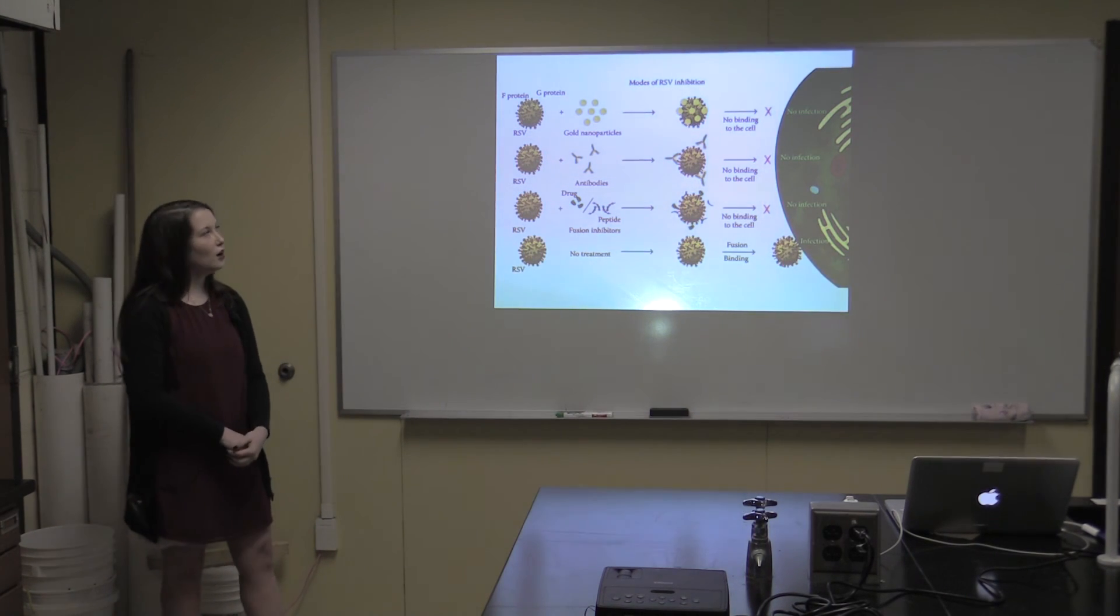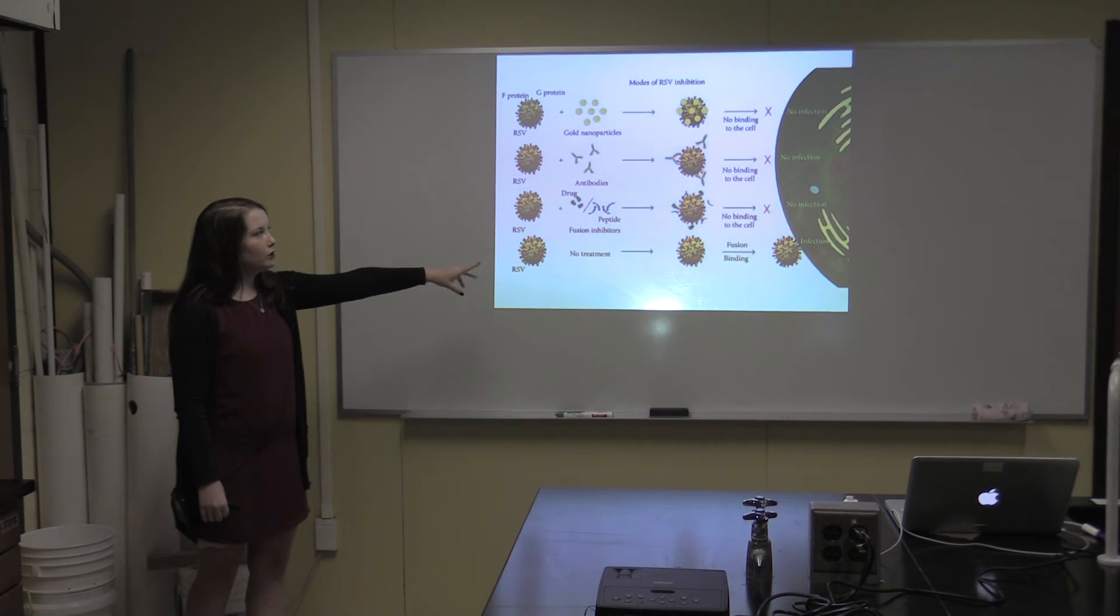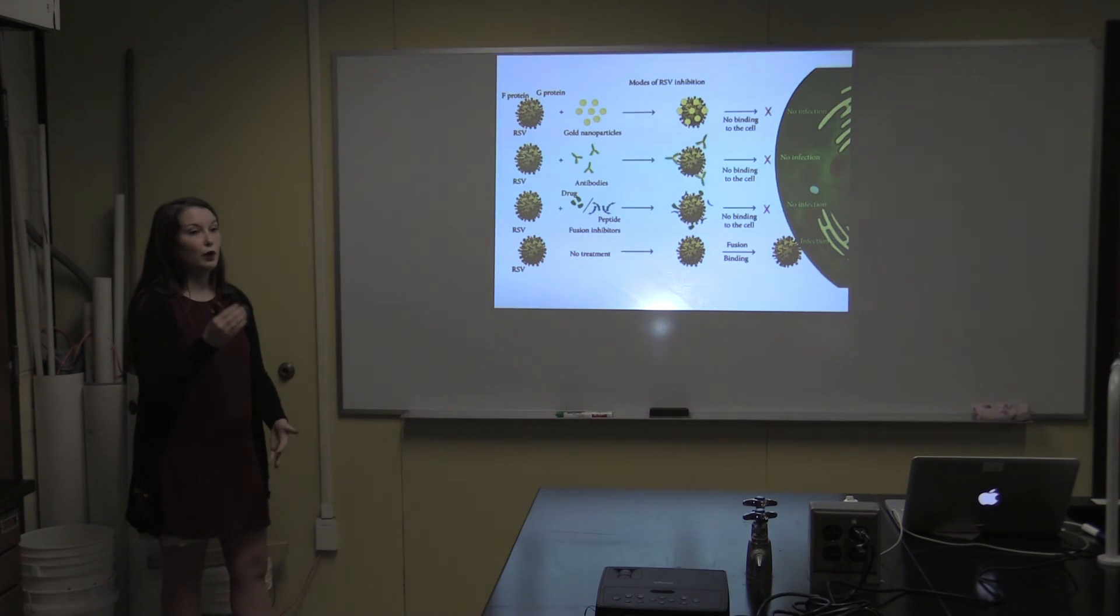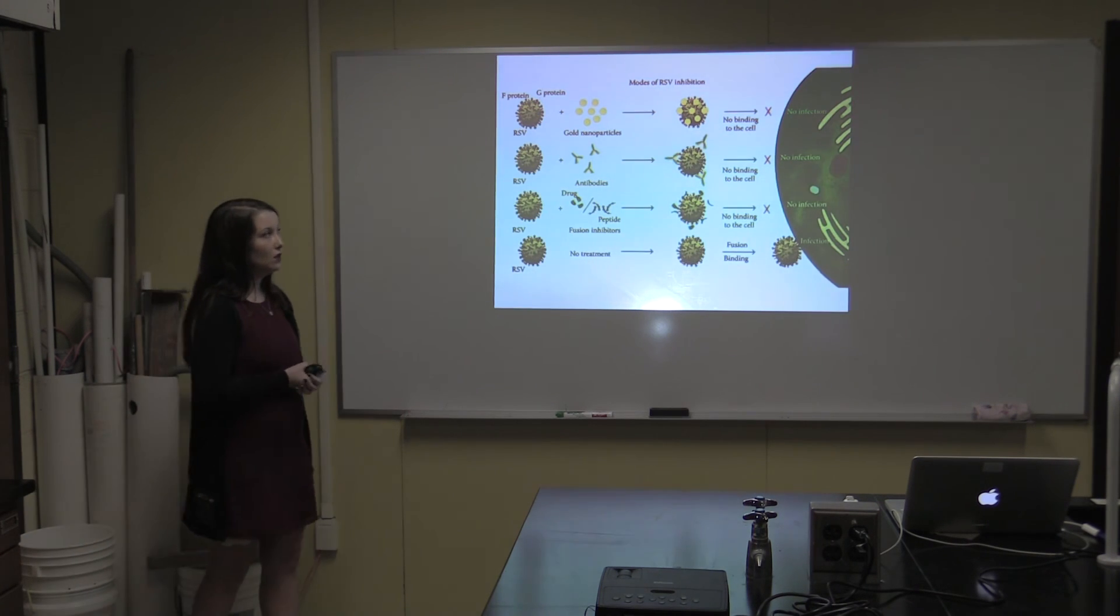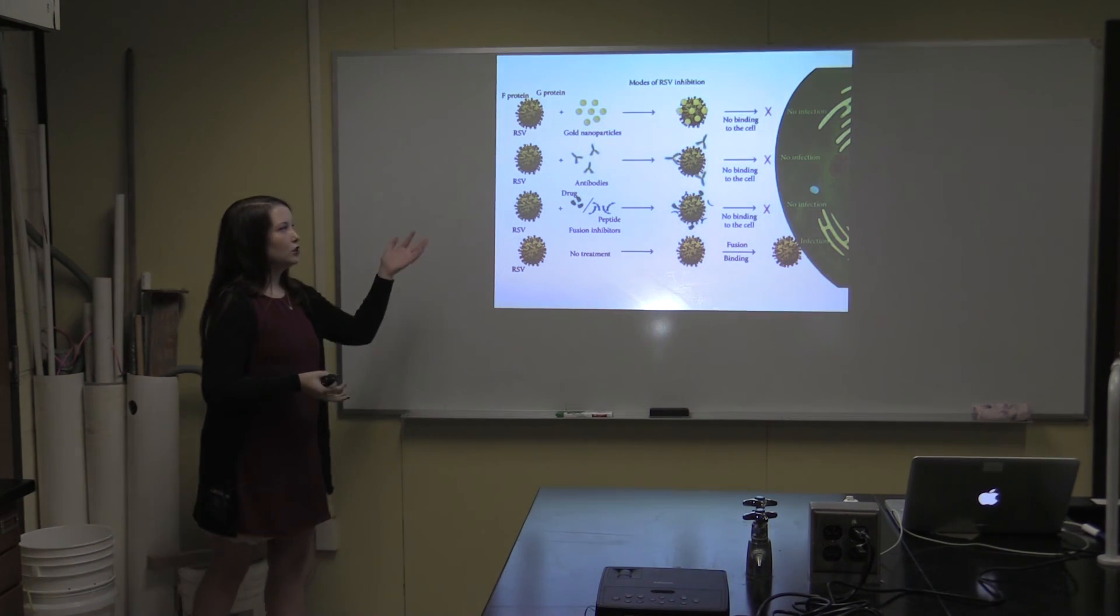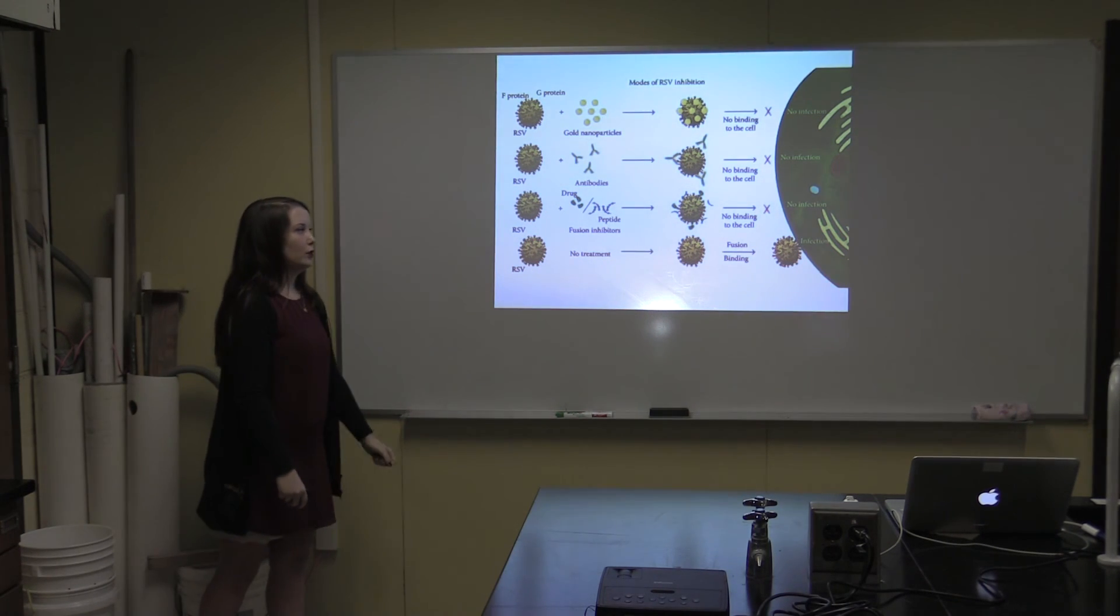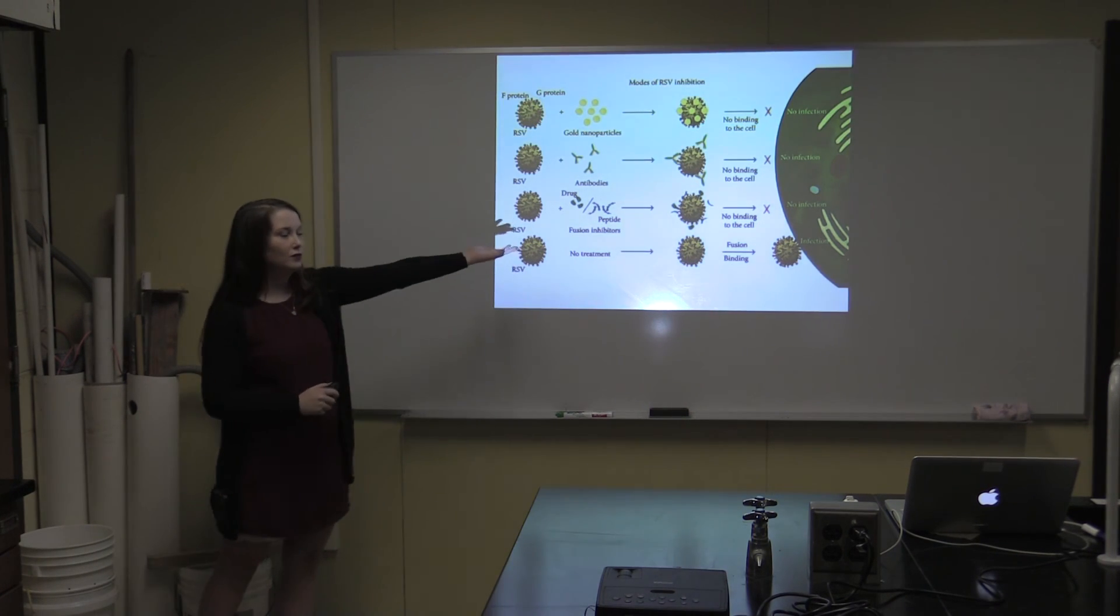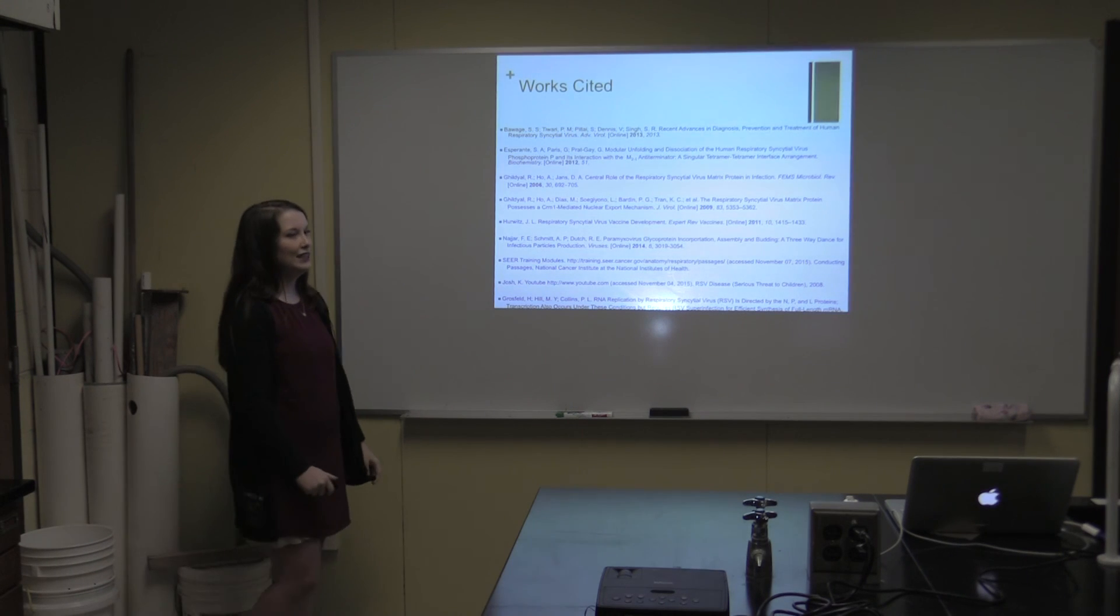But teams are working to make a vaccine through testing certain inhibitors. These are a few of the inhibitors that have been tested so far: gold nanoparticles, antibodies, and fusion inhibitors. Some of them bind to the attachment proteins and the fusion protein so those proteins can't bind to the cell. There's also antibodies which hinder it from getting there, and then fusion inhibitors which inhibit fusion to the epithelial cells. That's it. Any questions?